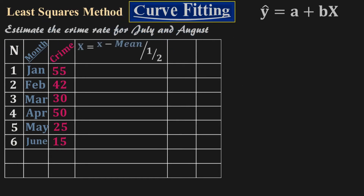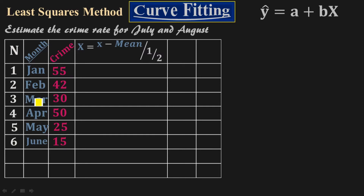I'm adding a column Capital X, defined as X minus the mean, all divided by 1.5. For an even number of points, we take the mean from the two middle points, March and April. March is month 3, April is month 4, so (3 + 4) / 2 = 3.5. The mean value along the x-axis is 3.5. You pick these two middle points because there are two points above and two points below.